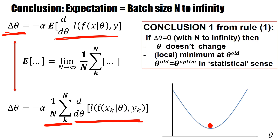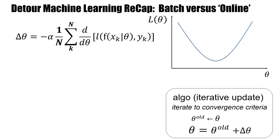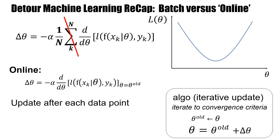So we have an update rule that can be written either as local gradients per data point with an expectation, or as local gradients averaged over an infinitely large number of data points. In both cases, if the parameter doesn't change as N goes to infinity, we are at a local minimum — the optimal parameter in the statistical sense of minimizing the expected loss. That was the batch rule. What happens with an online rule? Basically, we cut out the sum.